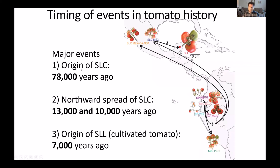Based on my results, the origin of SLC, the intermediate group, was about 78,000 years ago in Ecuador. From there, two groups spread northward to Central America and Mexico, and that happened about 13,000 and 10,000 years ago. And finally, we have the domestication of the common tomato, which happened about 7,000 years ago in Mexico.